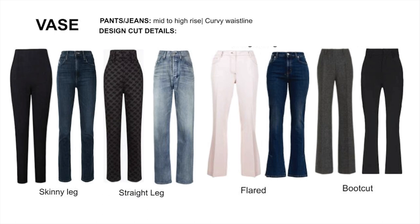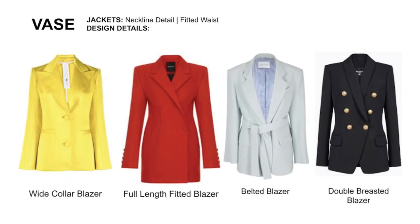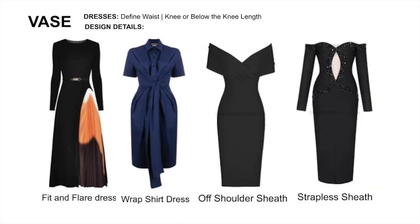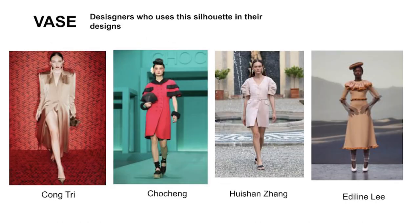For pants and jeans, go with mid to high rise — make sure the waist is curvy with room for hips and bottom, and check the inseam. For jackets, go with mid to full length with focus at the waist. For coats, focus on waist definition and it should hit below the knee. For dresses, make sure to define the waist, and the length should be at the knee or below.